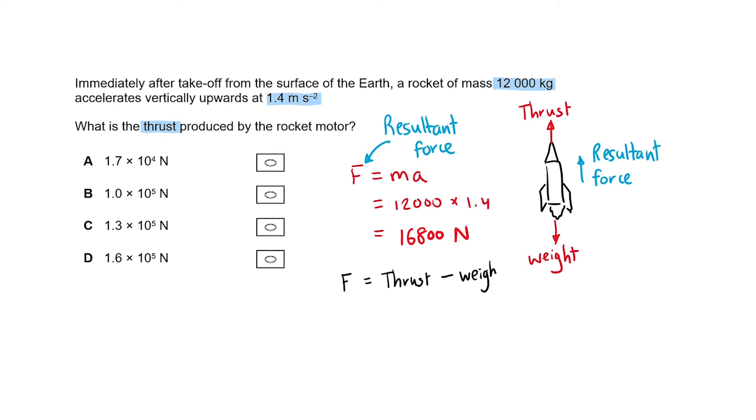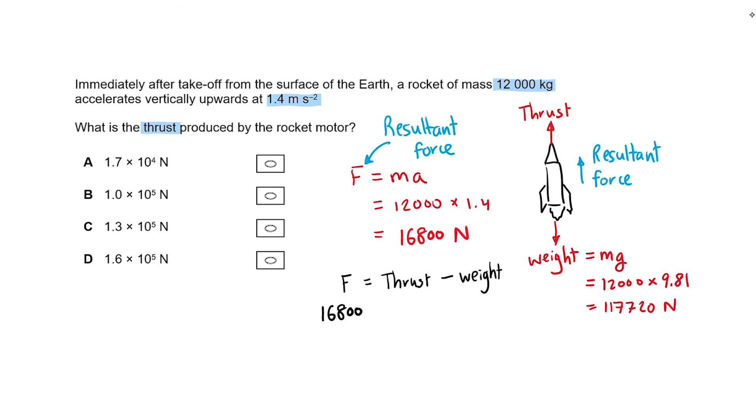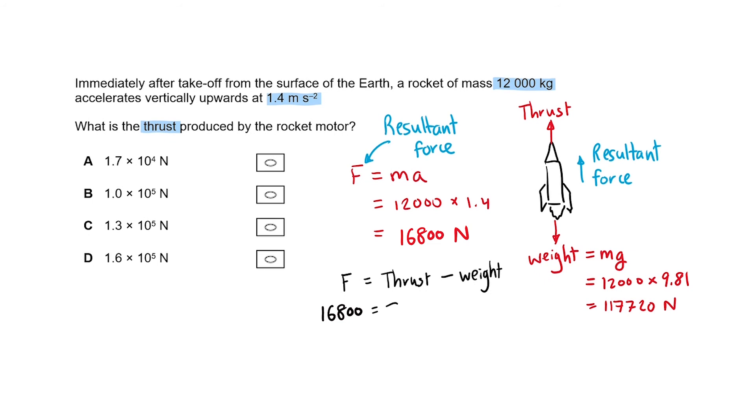But we also know that the weight of an object is equal to its mass times gravitational acceleration, which is 9.81 meters per second squared. We've worked out the resultant force to be 16,800 Newtons, and the weight to be 117,720 Newtons.